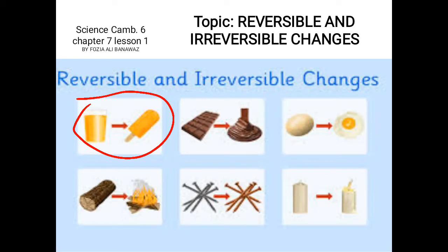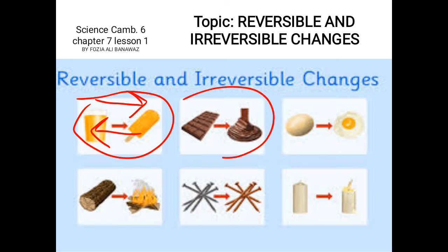This picture is enough to explain that when we freeze liquid juice, it becomes ice cream. And when we put the ice cream out of the freezer box, it becomes liquid again. So this is something which is recoverable. Similarly, when we heat a chocolate bar, it melts down and turns into liquid. But by cooling, again it is solidified. So a change which is reverted back.